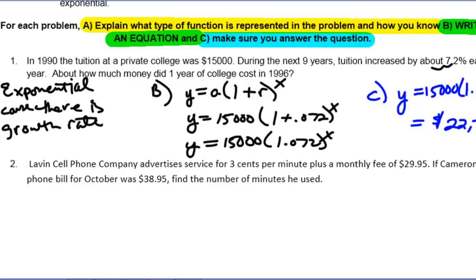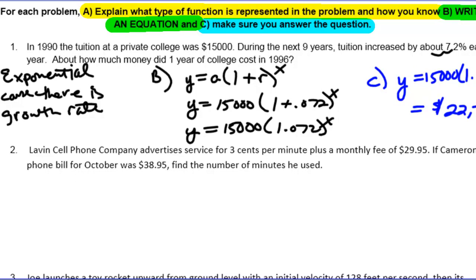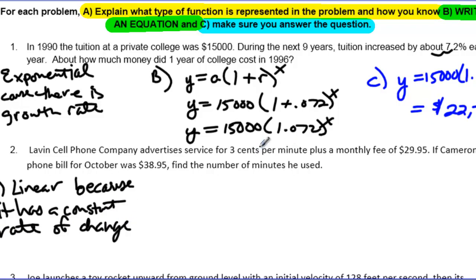Let's take a look at example 2. Lavon Cell Phone Company advertised a service for 3 cents per minute plus a monthly fee of $29.95. If Cameron's phone bill for October was $38.95, find the number of minutes he used. When I read this, I read 3 cents per minute and I read that as a constant rate of change. Remember our definition of linear equations is that they have a constant rate of change. So this is linear because it has a constant rate of change. I understand it's constant because for one minute that's 3 cents, two minutes it goes up to 6, three minutes it goes up to 9. It keeps going up 3 each time.